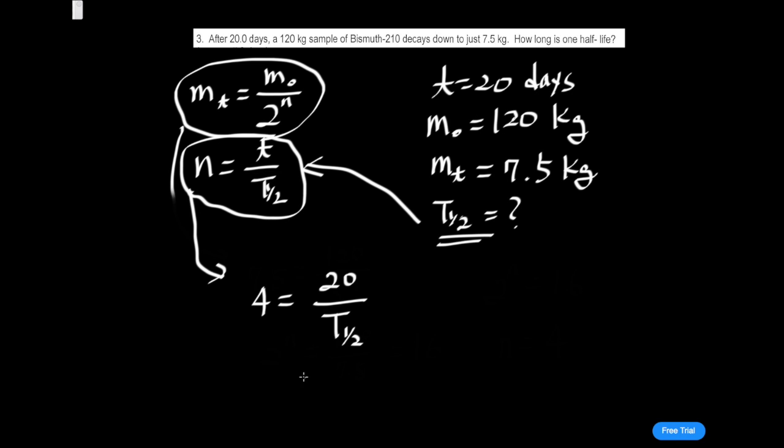Okay, so again, we solve for t_half. Half-life is equal to 20 over 4, so that's 5 days. So our half-life, our answer to this problem, is 5 days.